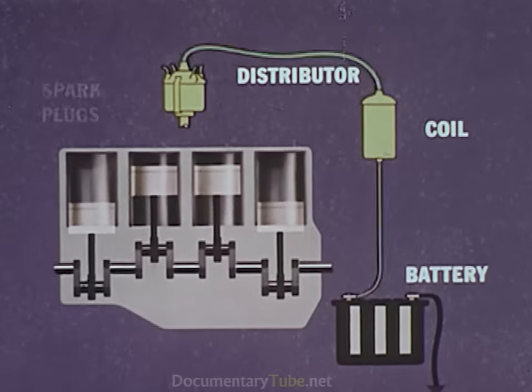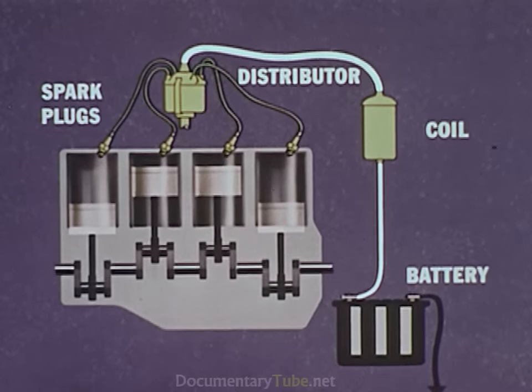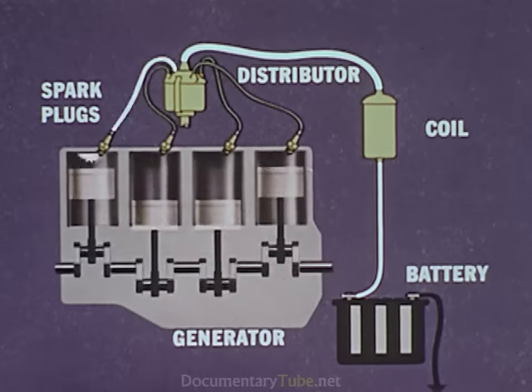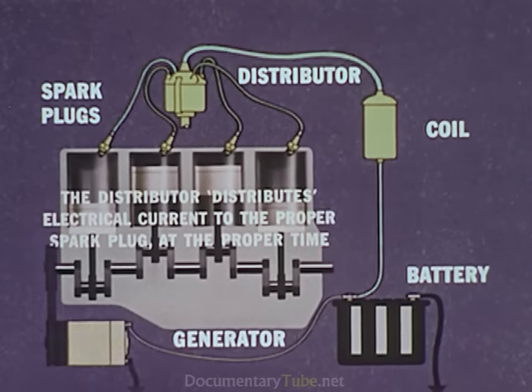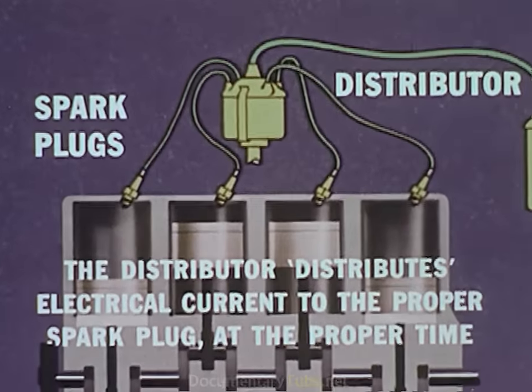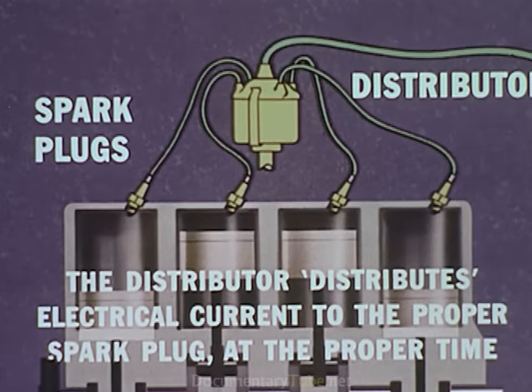And then sends it through the distributor to the spark plugs located in the cylinders. The distributor distributes electrical current to the proper spark plug at the proper time.